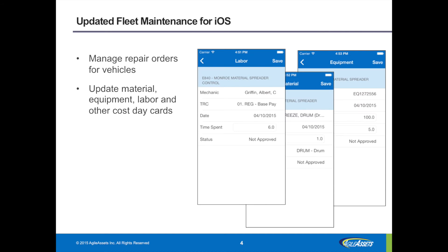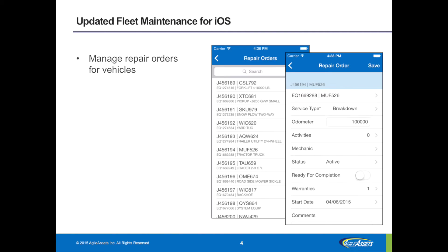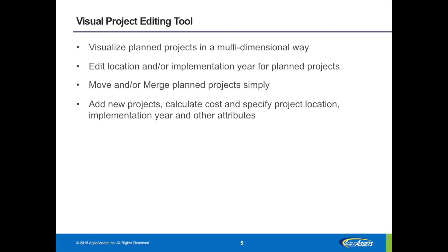Going back to the materials management app — both apps really start to take advantage of what's going on because the device is mobile. You can take advantage of device capabilities. For example, on the materials management app, you can use the camera as a barcode scanner. You can scan barcodes on inventory, pull up the item, and actually update its quantity. So you can go out into the warehouse, scan something, and pull up that information — really looking at how to take advantage of what the device provides, not just taking what we have on the web and showcasing it in a smaller environment.